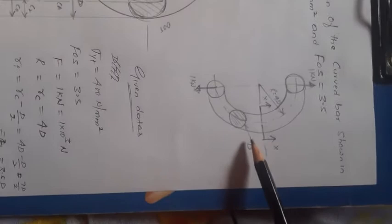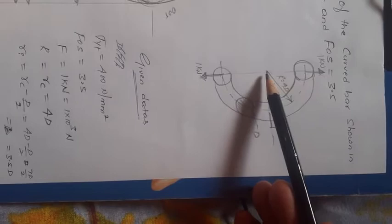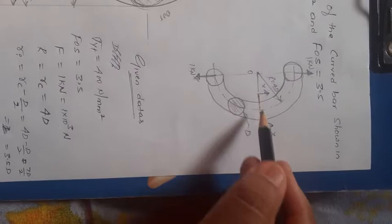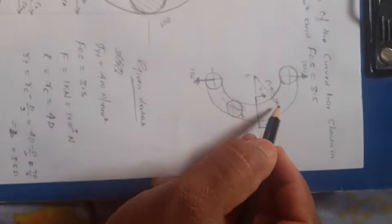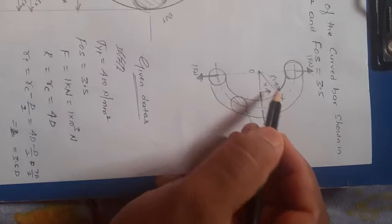By seeing the sketch, the load of 1 kN is acting here, and it coincides with the central axis of the geometry. The critical section is XX. The cross-section is circular with diameter D. The center of curvature to the central axis is given as R equals 4 times D.